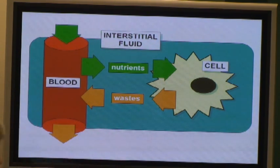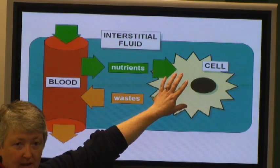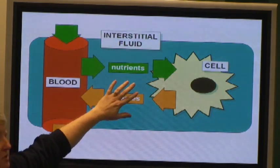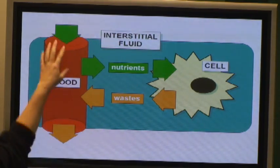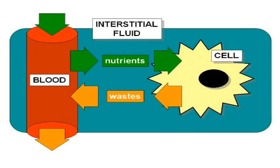Any kind of chemical changes that are happening in the cells affect the chemicals in the interstitial fluid, which affects the chemicals in the bloodstream. That's why, most of the time, we don't have to biopsy tissues. We can just draw blood, because that will tell us a lot about what's going on inside our cells. It's all in a big equilibrium.